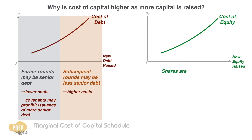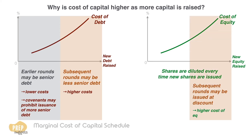For equity, shares are diluted every time the company issues new shares. New rounds of stock issuance often have to be issued at a discount in order to attract new investments. This means that the cost of equity to the firm usually increases with each round of new share issuance.